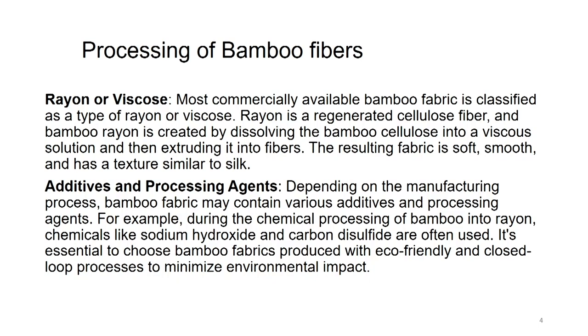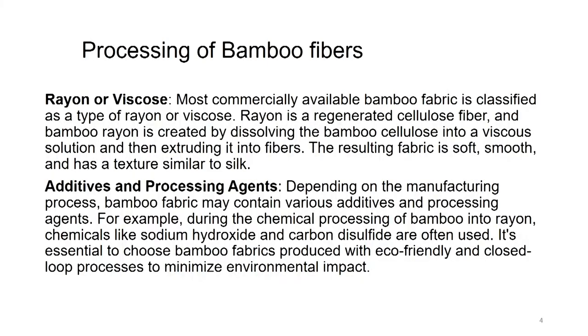Additives and processing agents: depending on the manufacturing process, bamboo fabric may contain various additives and processing agents. During the chemical processing of bamboo into rayon, chemicals like sodium hydroxide and carbon disulfide are often used. It is essential to choose bamboo fabric produced with eco-friendly and closed-loop processes to minimize environmental impact. These two chemicals — sodium hydroxide and carbon disulfide — are very harmful for the environment as well as for humans, so if they can be avoided, it would be a very good choice of extraction process.